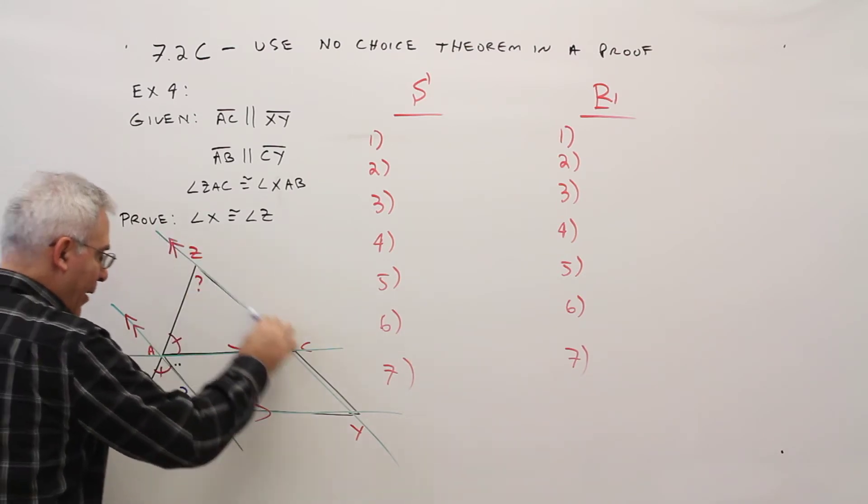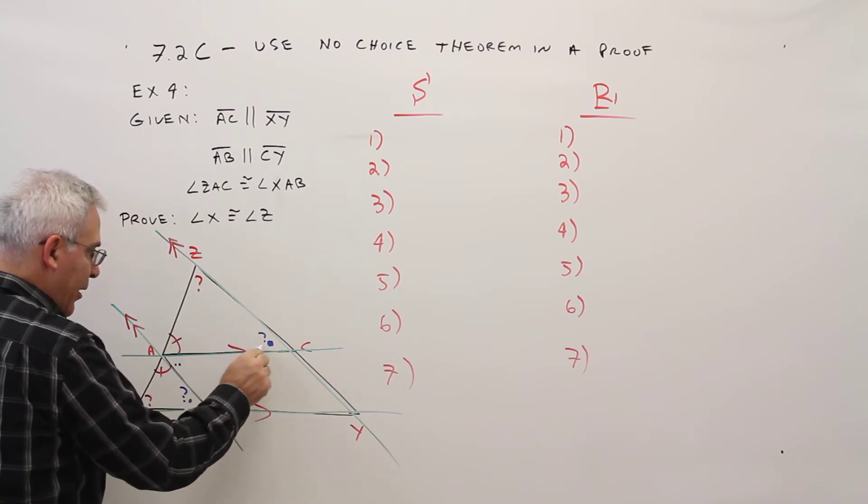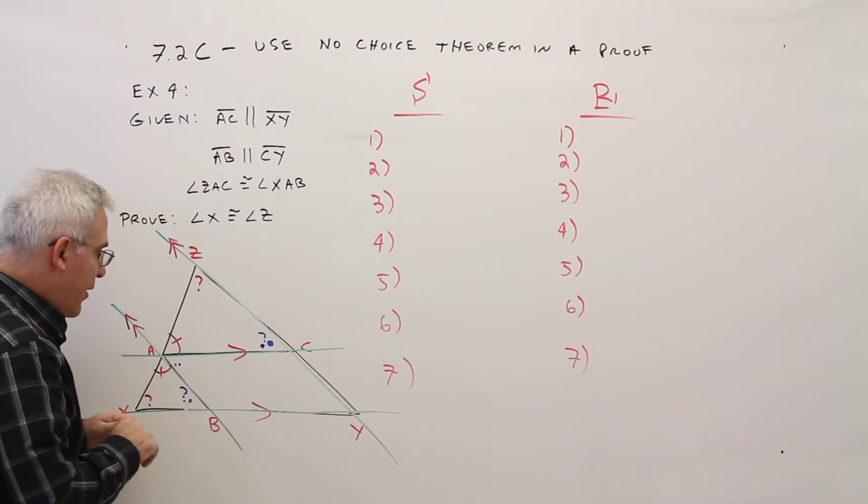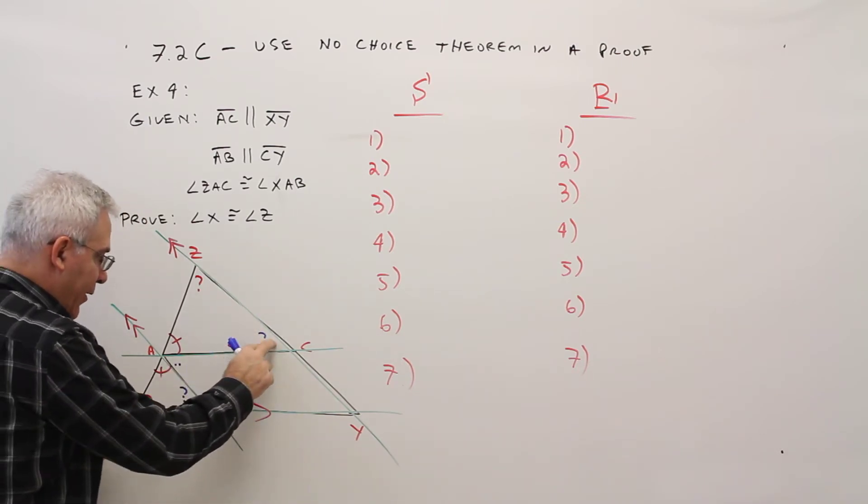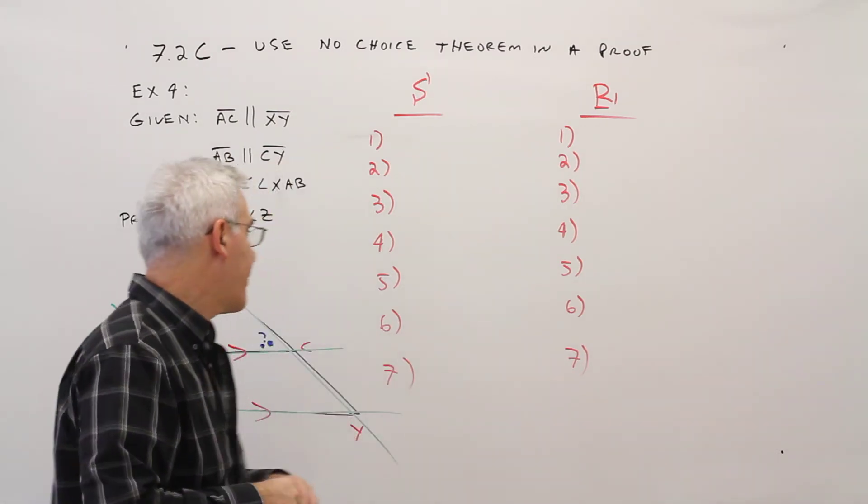And then I've got a parallel here and a parallel here, so this angle and this angle are alternate interior. So then I can use transitive to get this one to that one, and now that's going to be the way I'm going to do my proof. So let's put it down.